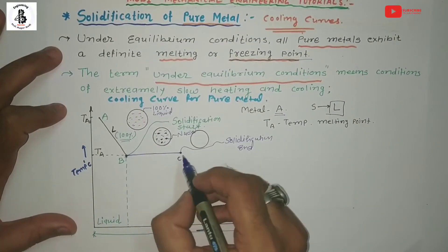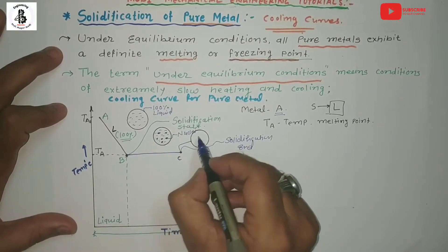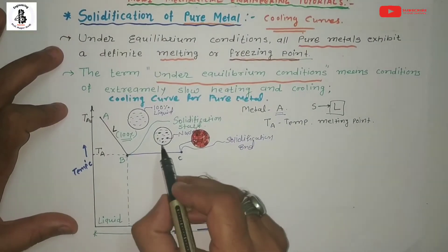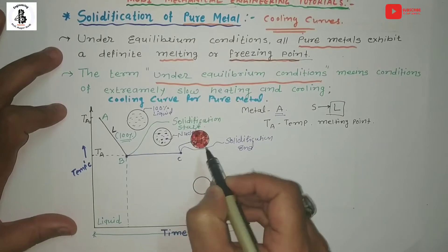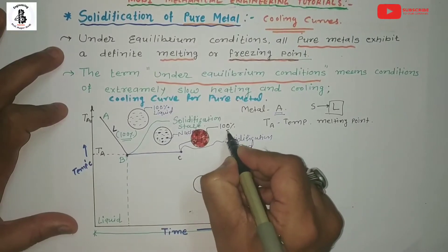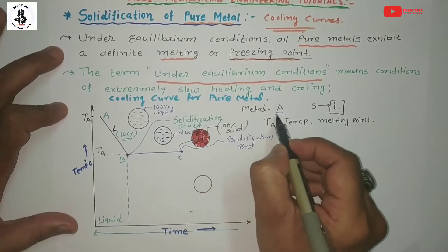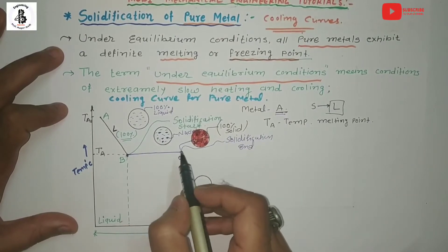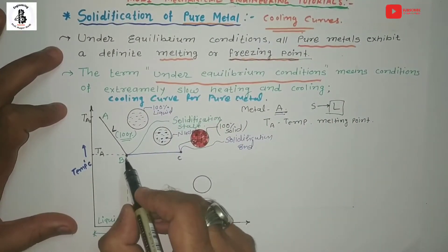At point C, if you look at the microstructural view, all the liquid phase of metal A will be completely converting into 100% solid. So at point C it forms 100% solid, and that solid will be having the atomic structure of metal A. In between — the transformation from liquid to solid — in the case of solidification of pure metal, it always follows at constant temperature. That temperature is representing as the freezing point.